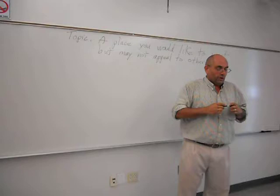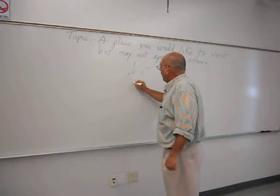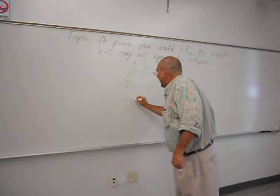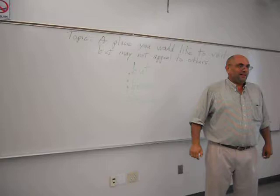I'd like you to write down the following three words — these are words that indicate contrast. The word 'but,' and I'll put a comma in front of it. The word 'however,' and I'm going to put a semicolon in front of it. And the word 'although,' and I'm not going to put anything before or after it. So: but, however, and although.